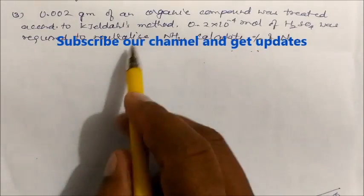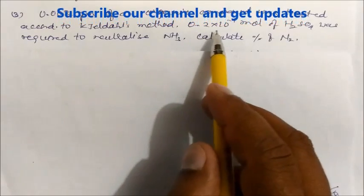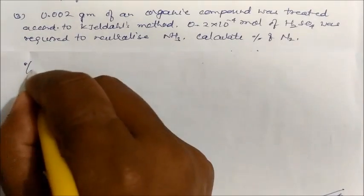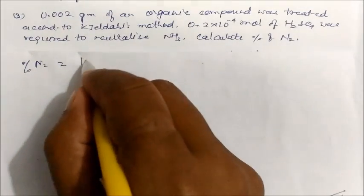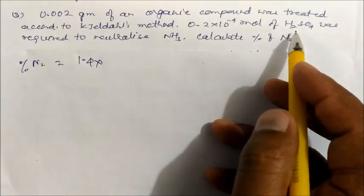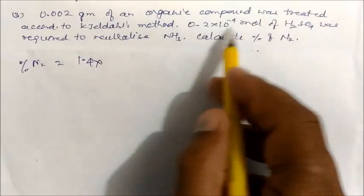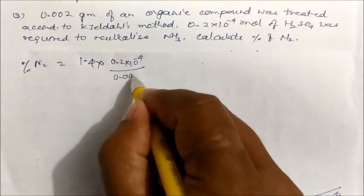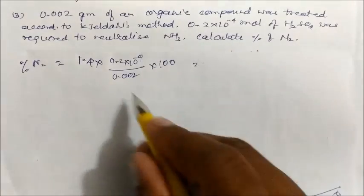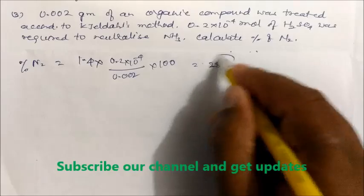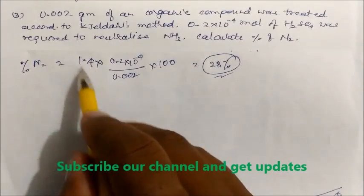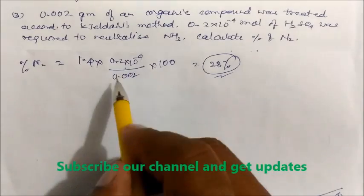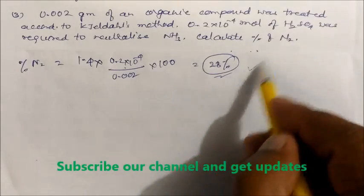Question 3: 0.002 gram of an organic compound was treated according to the Kjeldahl method, and 0.2 × 10⁻⁴ moles of H₂PO₄ are required to neutralize the ammonia. The milliequivalents of acid neutralizing ammonia is directly given, so no back-calculation is needed. Using the formula: 1.4 × (0.2 × 10⁻⁴) ÷ 0.002 × 100. On solving, you get 28%. Remember the formula: 1.4 × milliequivalents of acid neutralizing ammonia ÷ weight of organic compound × 100.